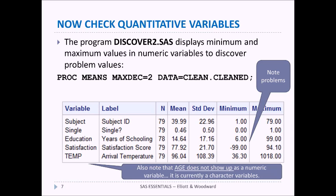Education, a maximum of 99 is probably not correct. Satisfaction score, negative 99, that's a problem. And temperatures range from 36 to 1018, obviously not correct. Another thing we should notice is that age doesn't even show up as a numeric variable. If we go back and look at our data set we see that it is a character variable. So we need to fix that as well.